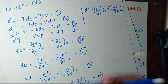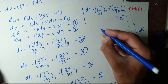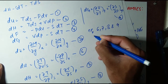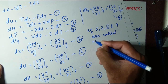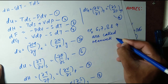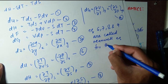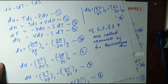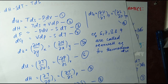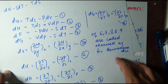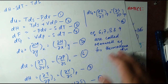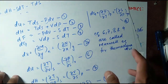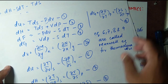Equations six, seven, eight, and nine are called the Maxwell equations for thermodynamics. In our next lecture, we will use these four Maxwell equations to derive the TDS equations. Thank you very much for your time. Assalamu Alaikum.